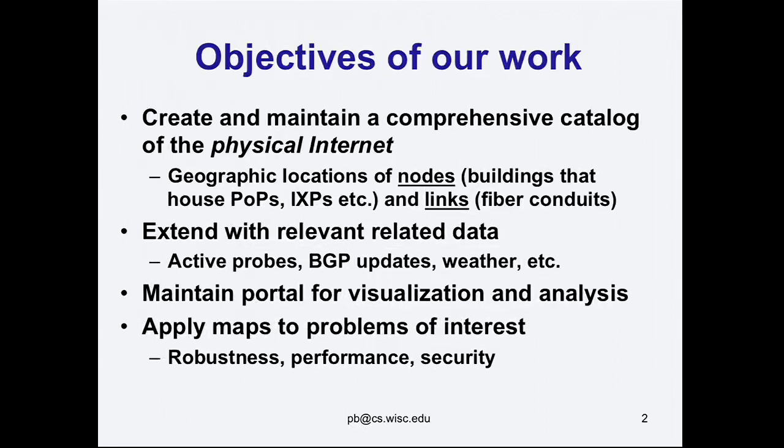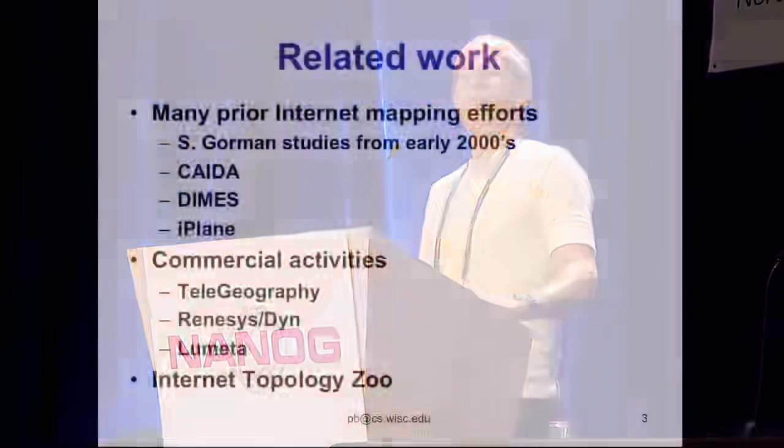We'd like to build this comprehensive repository. Beyond simply gathering the data, the objective is to produce a portal that allows the data to be visualized and analyzed, and then ultimately, since we're a research entity, to apply the maps we've put together to research problems of interest. If you've ever read a paper about internet topology, it always starts with some preamble like 'the need to understand physical structure can be applied to understanding application performance and robustness' — well, we'd actually like to use the maps to address those problems.